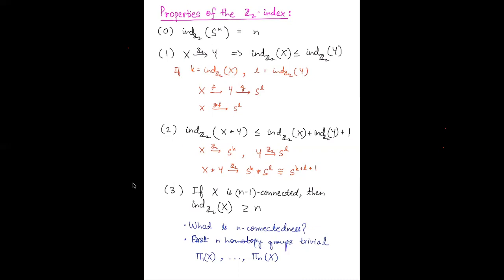The third property gives a bound on the index of a join: the index of X * Y is less than or equal to the index of X plus the index of Y plus one. The fourth property: if X is (n-1)-connected, then its index is greater than or equal to n.